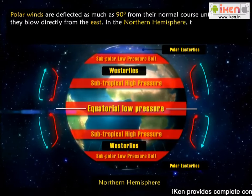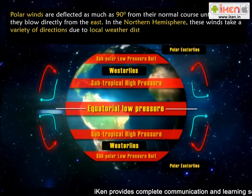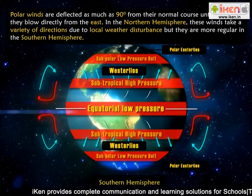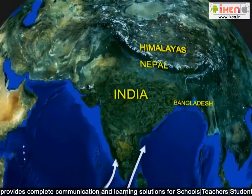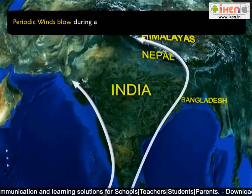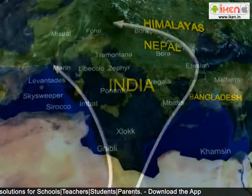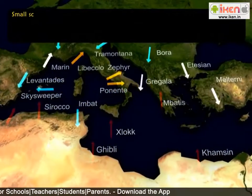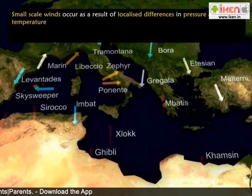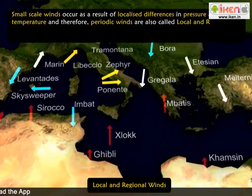In the northern hemisphere, these winds take a variety of directions due to local weather disturbance, but they are more regular in the southern hemisphere. The second major wind system is that of the periodic winds, which blow during a particular period of the day or season of the year. Small-scale winds occur as a result of localised differences in pressure and temperature, and therefore periodic winds are also called local and regional winds.